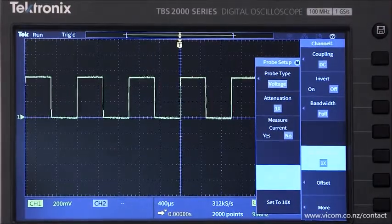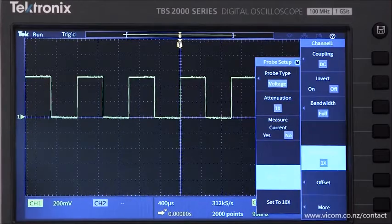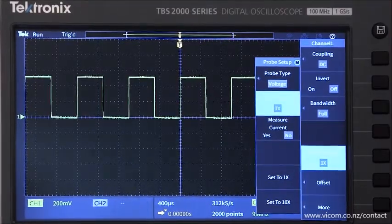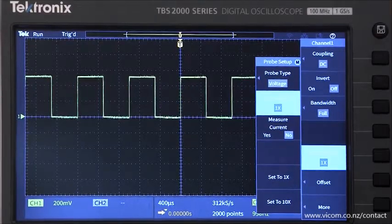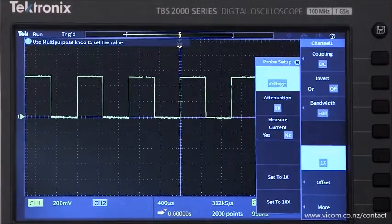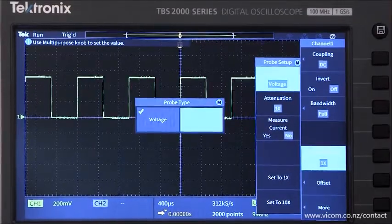Most of the time you'll be measuring voltage waveforms, but in some cases you may want to measure current. In these situations, you can set the probe type to current, and the scope will display amps instead of volts.